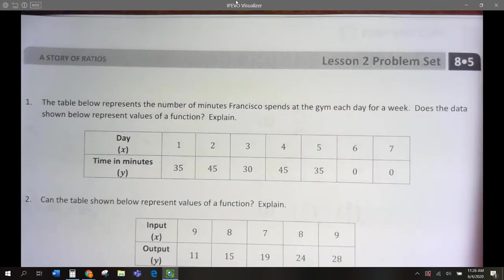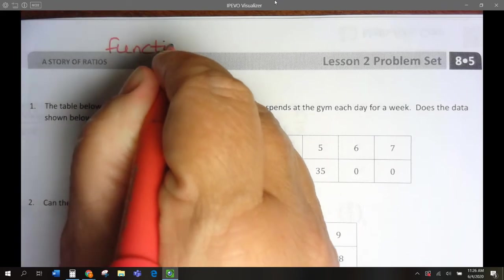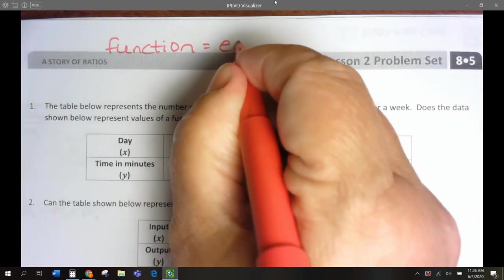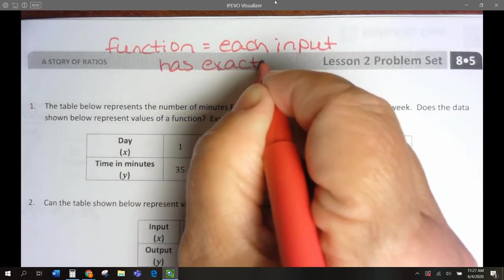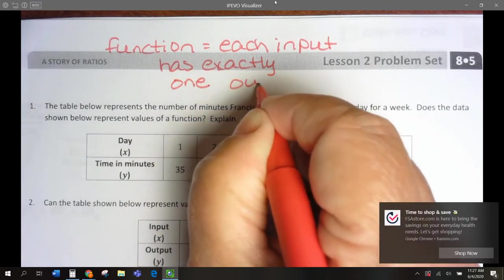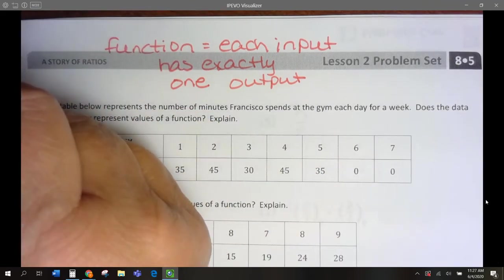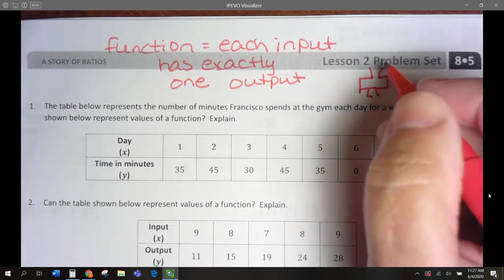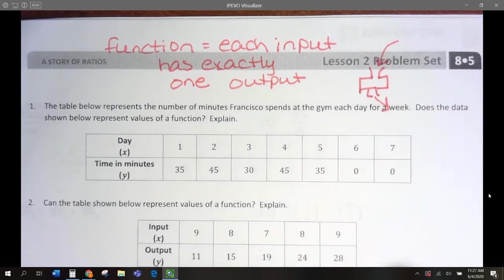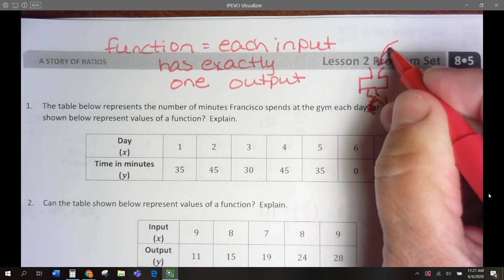Hello 8th graders, today we are doing module 5 problem set for lesson number 2. Today we're determining if something is a function or is not a function. Remember, a function has each input has exactly one output. We can think of a function as like a function machine. One thing goes in and one thing comes out each time. If we have one thing come in and two different things come out, it's not a function. For everything that goes in, just one thing will come out.